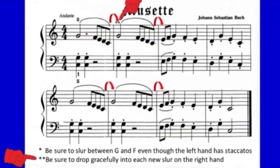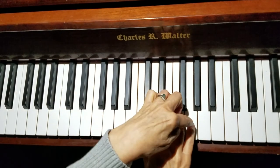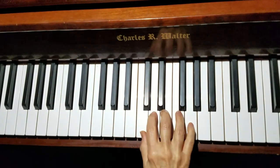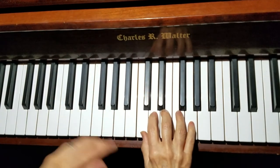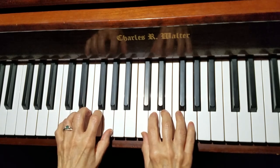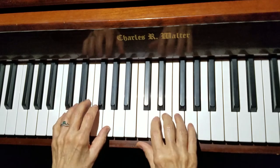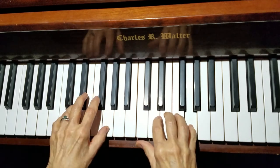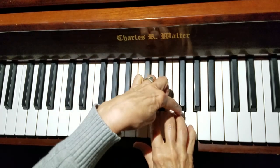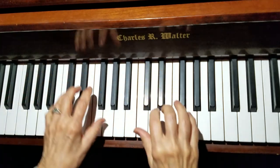The right hand drops gracefully into a new slur. We start with finger five on G. The left hand has C and G fifths, which are staccatos. We start together and go pop, pop — holding the G, then slur into F, E, D, C, drop.